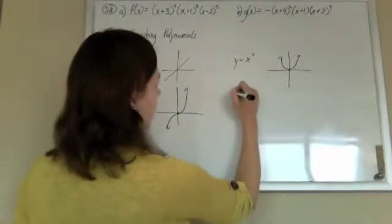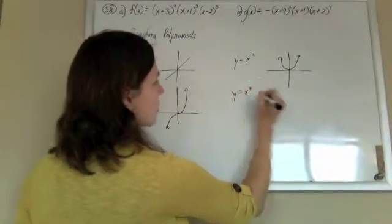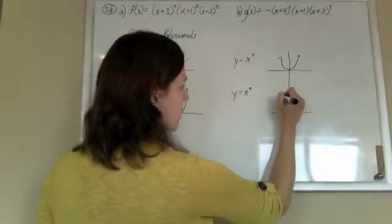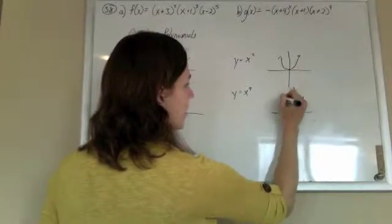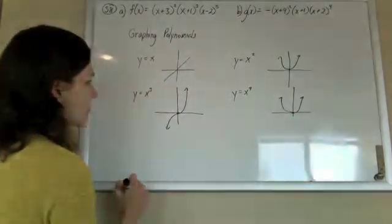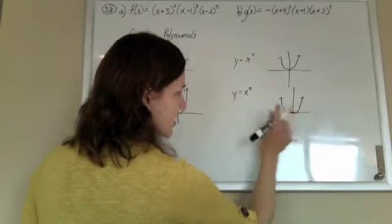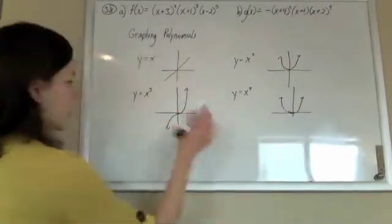And I know that y equals x to the 4. If you were to graph this, it basically looks like an x squared. It's just slightly flatter, slightly flatter there. I didn't draw that very well, but it'll just hover there a little bit longer before it goes up.